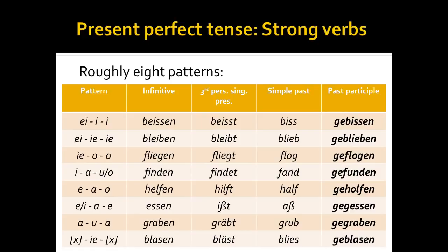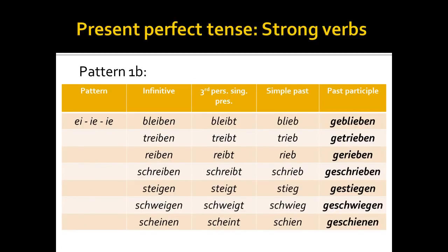If we look at pattern 1b, we start with bleiben — bleib, geblieben. Looking closer at this pattern, we'll notice that other verbs also follow the same pattern. Treiben is to drive, reiben is to rub, schreiben is to write, steigen is to climb, schweigen is to be silent, and scheinen is to shine. You can develop a feel for it: bleiben, bleib, geblieben; treiben, treib, getrieben; reiben, reib, gerieben; schreiben, schreib, geschrieben. Keep memorizing the patterns and eventually it'll become second nature to you.